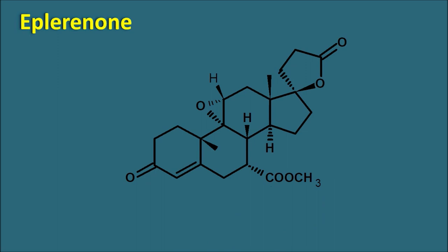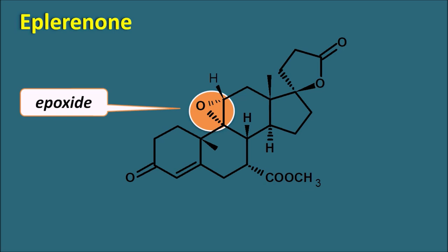Another related structure is eplerenone. Eplerenone also has a steroidal nucleus with a lactone, but with two modifications: it has an epoxide ring, and a methyl ester group at the sixth position instead of the thioethyl group found in spironolactone. This drug differs from spironolactone in that it has less affinity towards the steroid receptors.